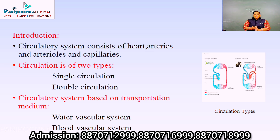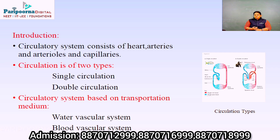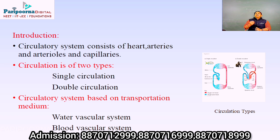Circulation can also be classified based on the transportation medium, giving us the water vascular system and the blood vascular system. In the water vascular system, the main circulation medium is water. This is found in primitive sea animals such as sponges. The blood vascular system uses blood as the transportation medium, originating from well-developed arthropods such as insects.